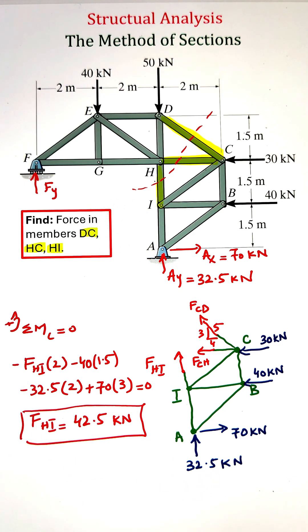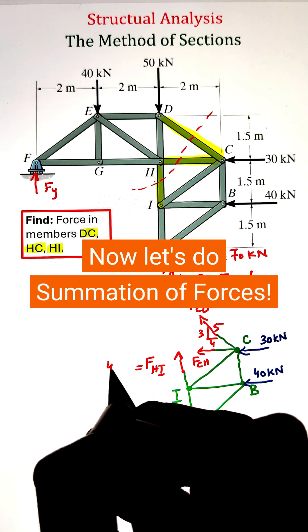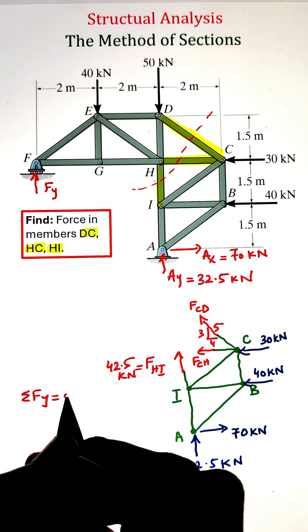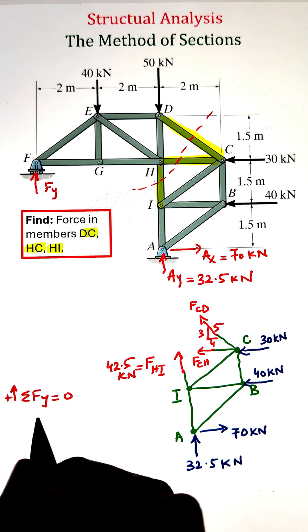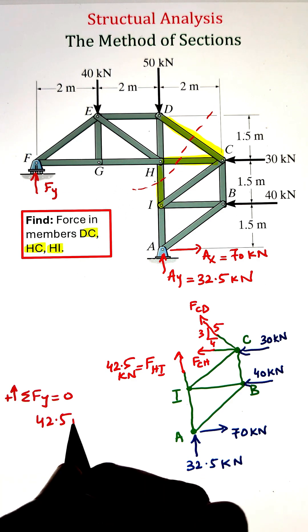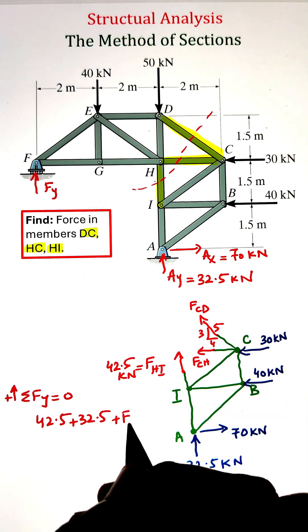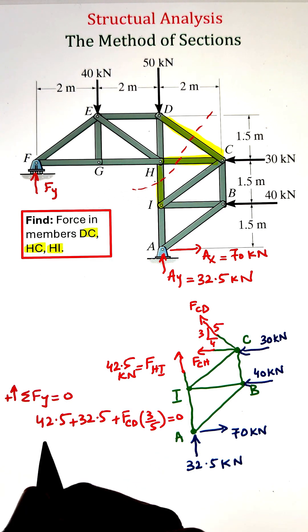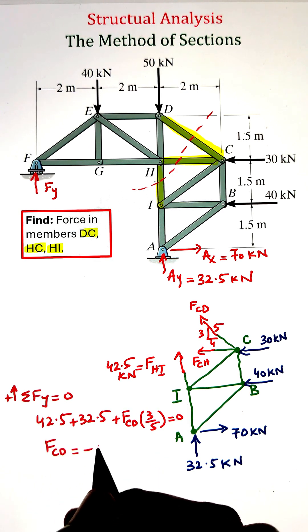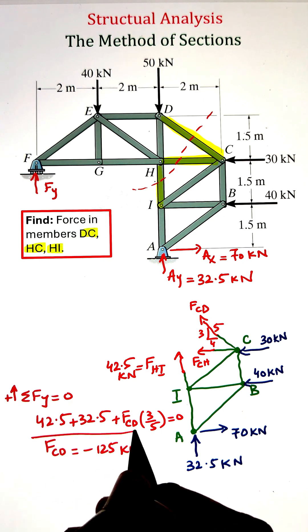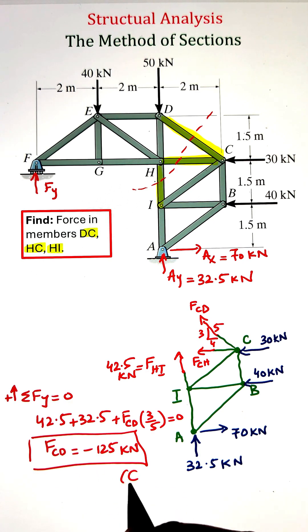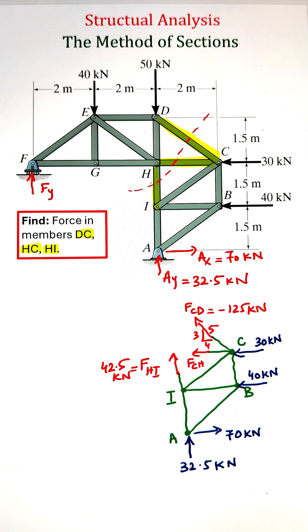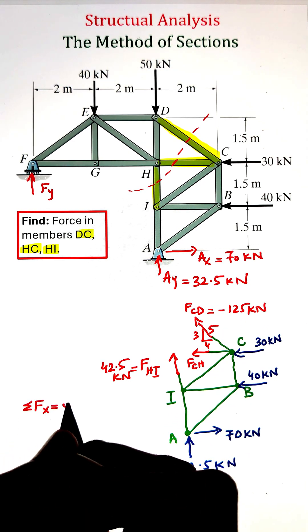Next we can write the summation of forces along the vertical direction and equate it equals to zero. Here we have that 42.5 kilonewton going in the tensile direction in member HI. We also have a support reaction of 32.5 kilonewtons going upward, and we also have our force FCD. The vertical component of that can be calculated by multiplying it with 3 over 5. Simplifying, we get a value of negative 1.25 kilonewtons. Here the negative sign is indicating that the force in the member is in compression.